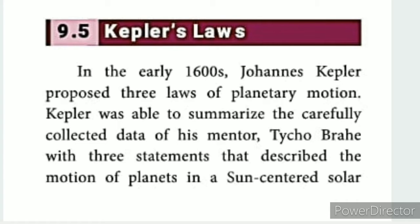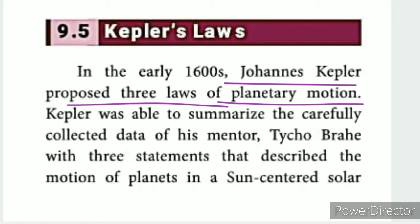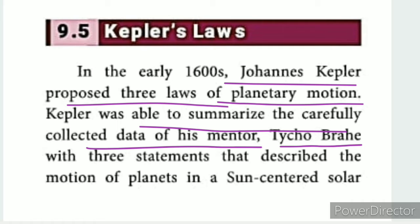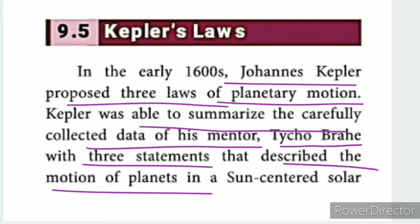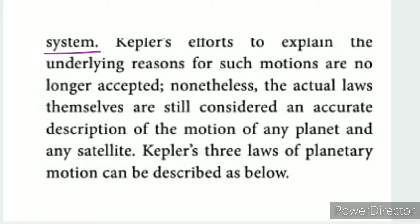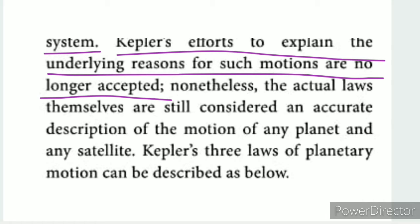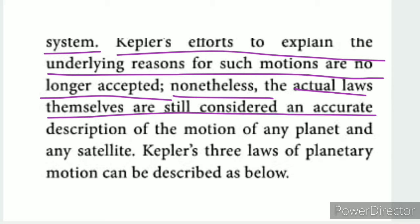In 1609, Johannes Kepler proposed 3 laws of planetary motion. Kepler's efforts to explain the underlying reasons for such motions are no longer accepted. Nonetheless, the actual laws themselves are still considered an accurate description of the motion of any planet or any satellite.